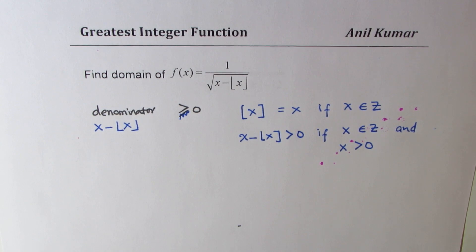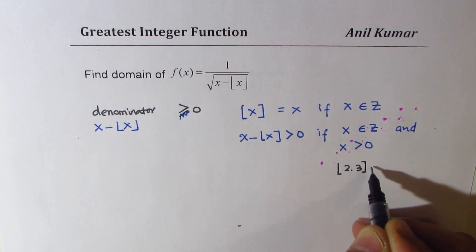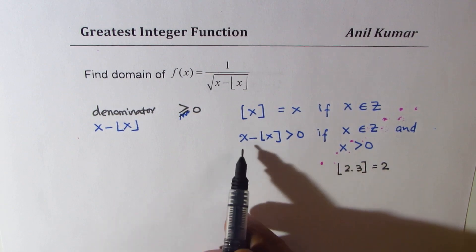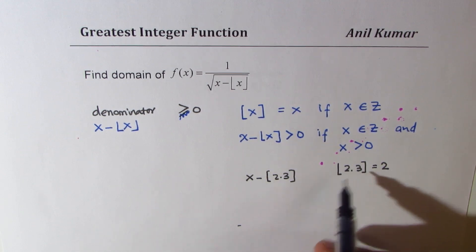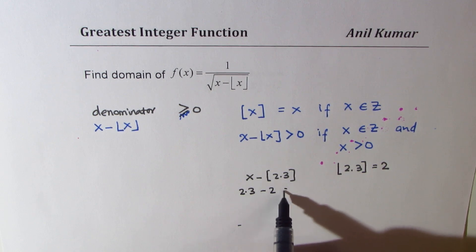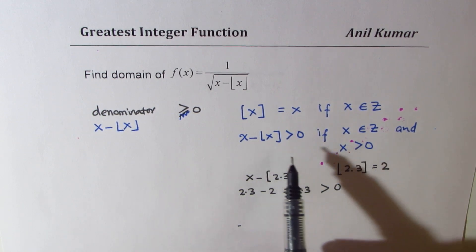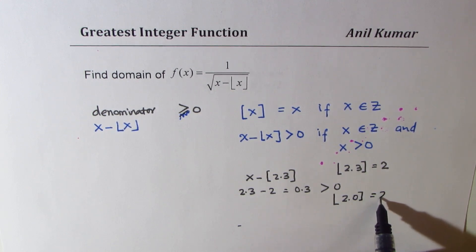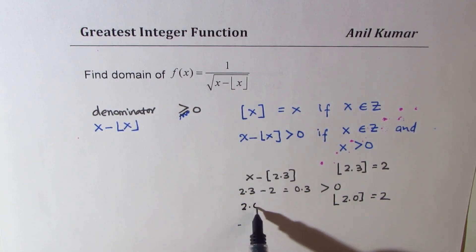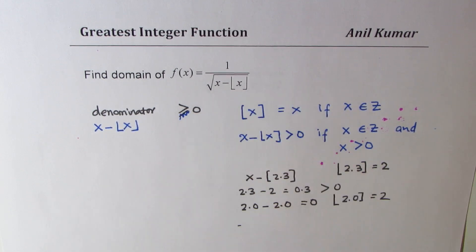For example, the greatest integer of 2.3 is 2. So x − ⌊x⌋ gives 2.3 − 2 = 0.3, which is greater than 0. However, if x is exactly 2.0, then ⌊2.0⌋ = 2 and 2.0 − 2 = 0 — and we cannot have 0 in the denominator. So integers must be excluded.